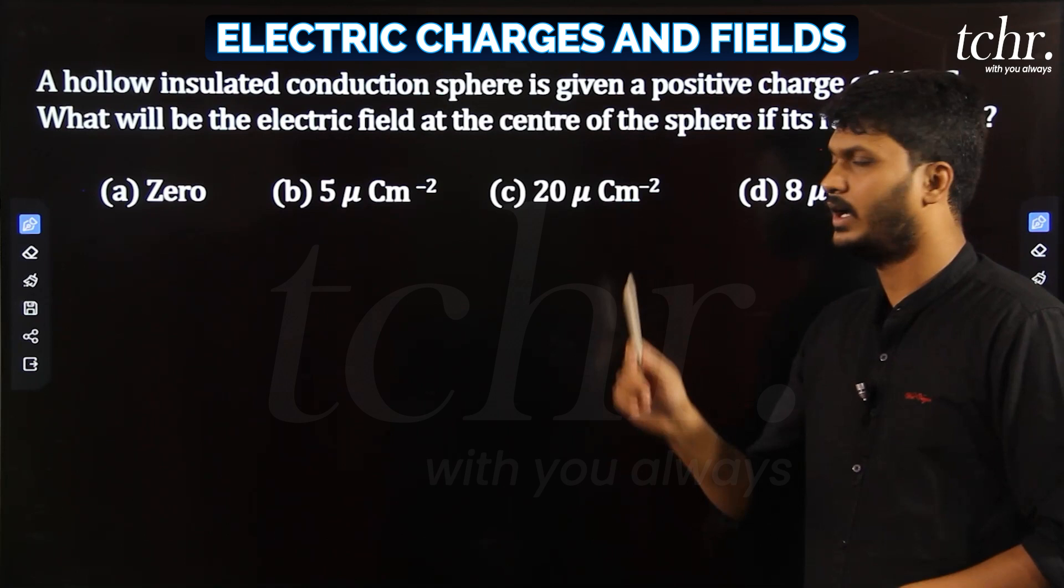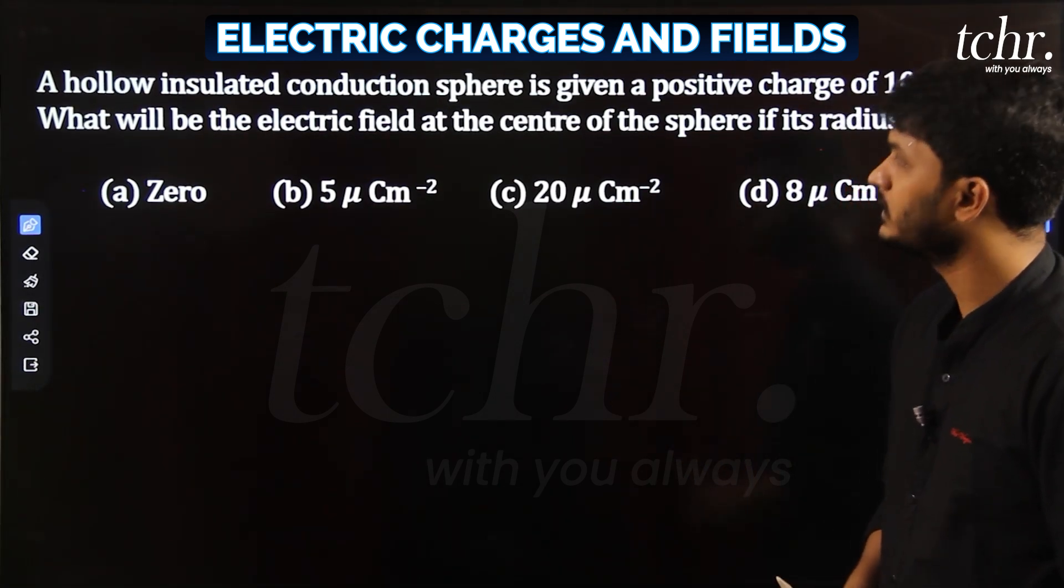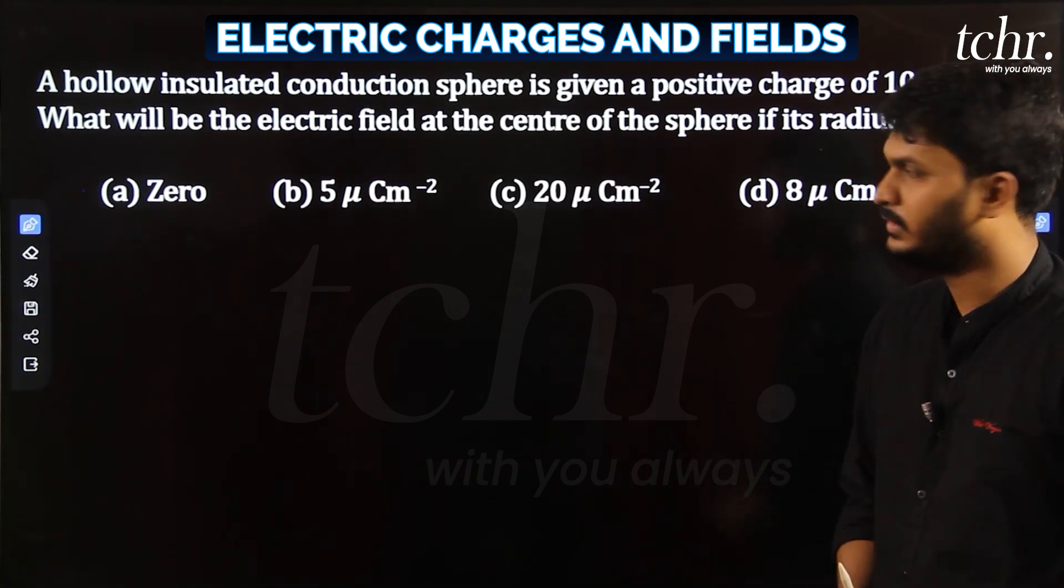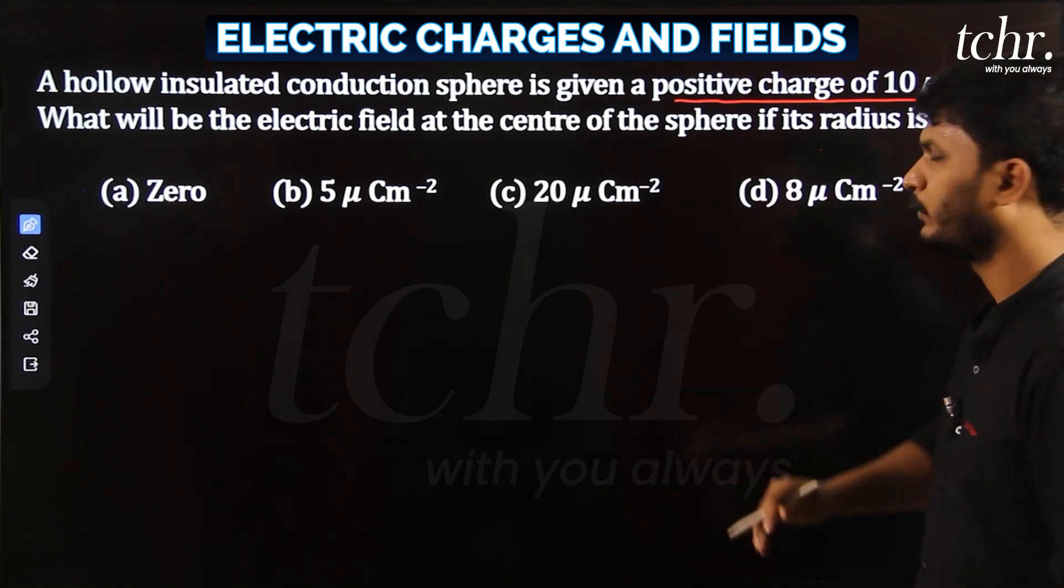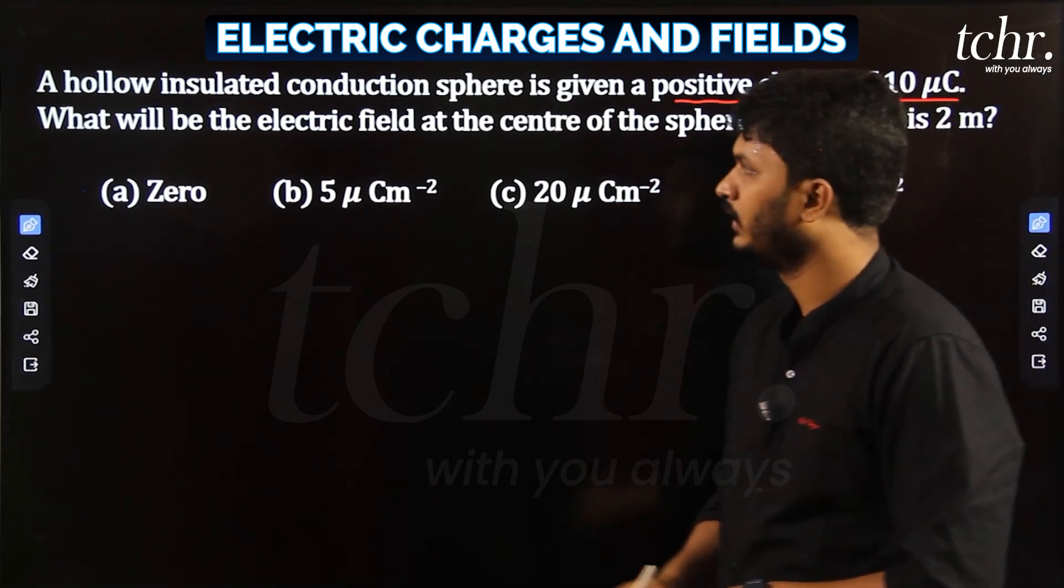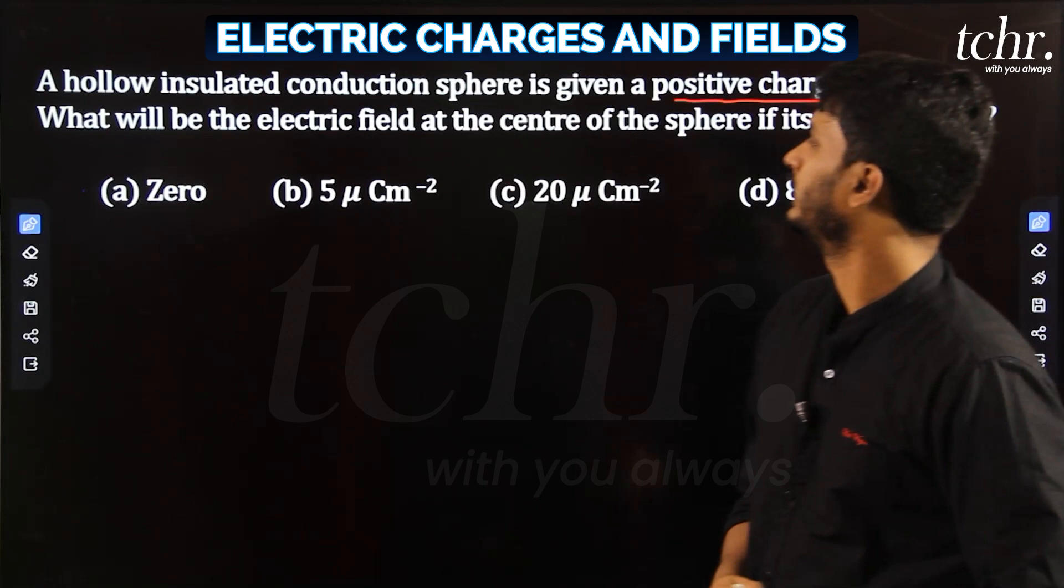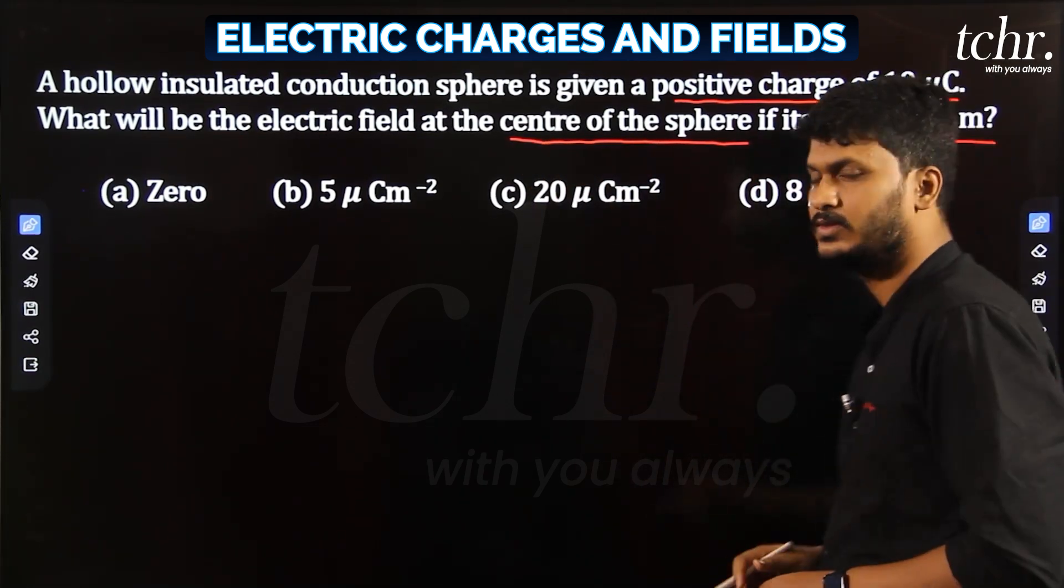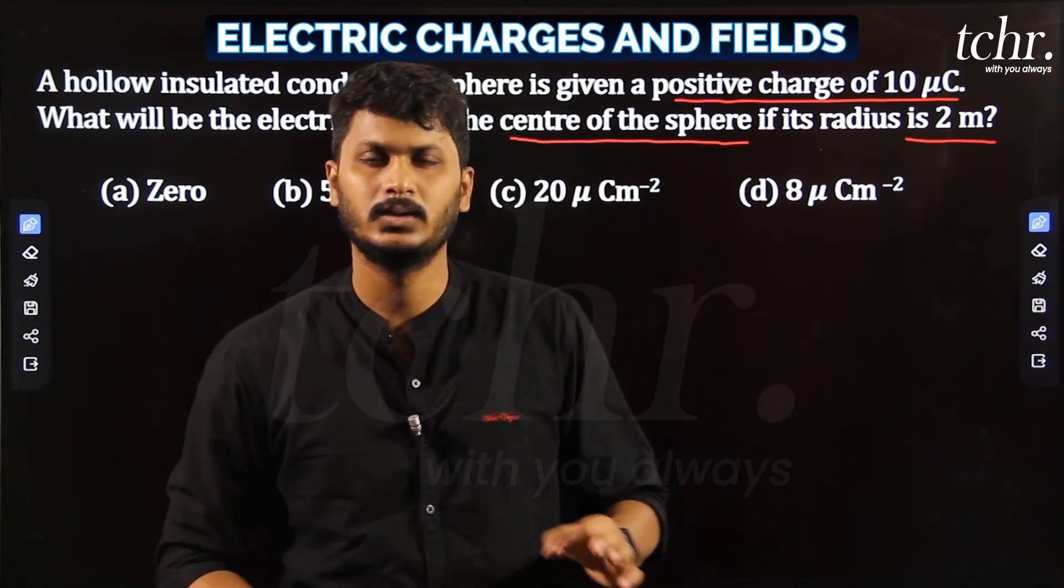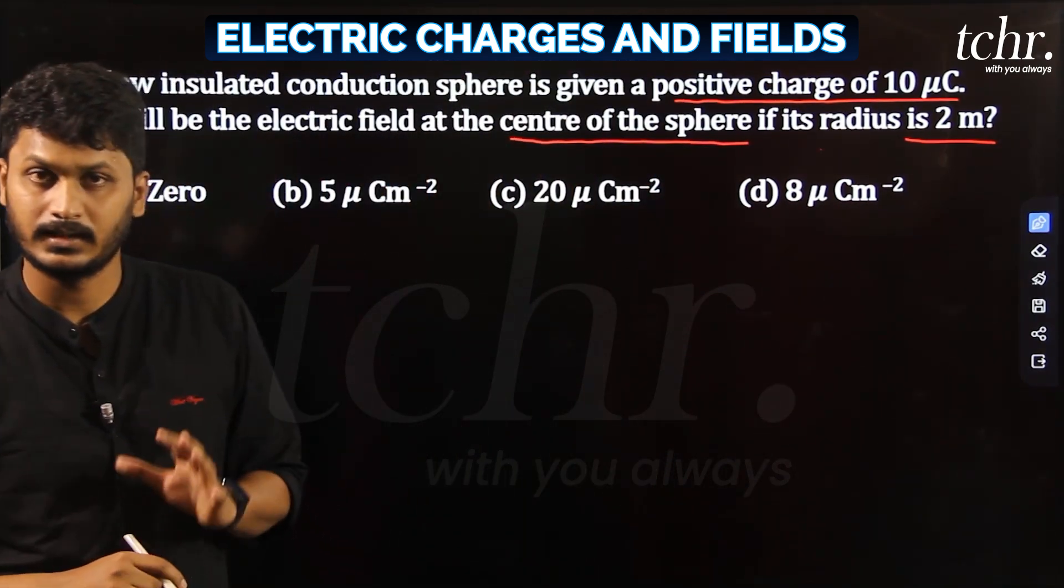The question is: A hollow insulated conduction sphere is given a positive charge of 10 microcoulomb. What will be the electric field at the center of the sphere if its radius is 2 meters? You might think you can answer directly, but I have something to show you why.